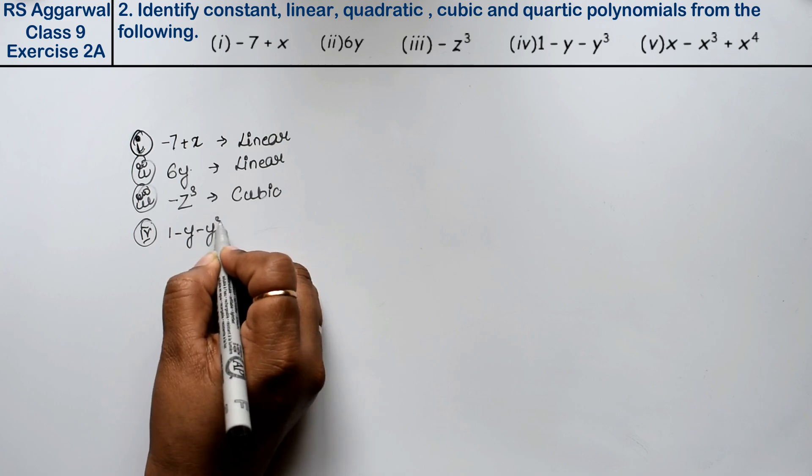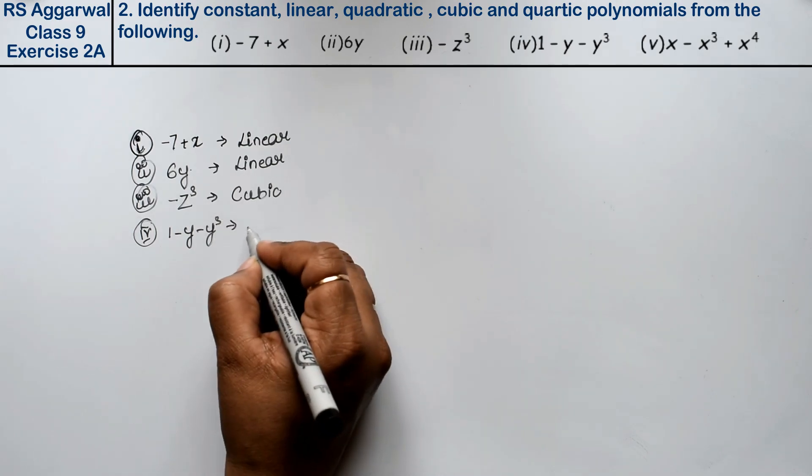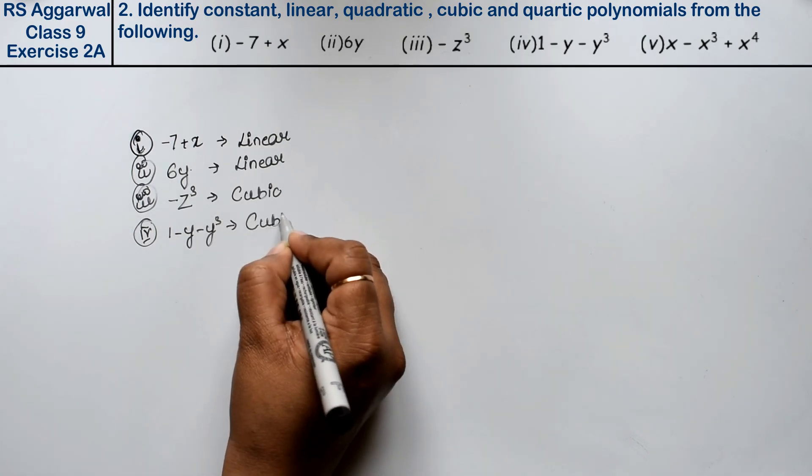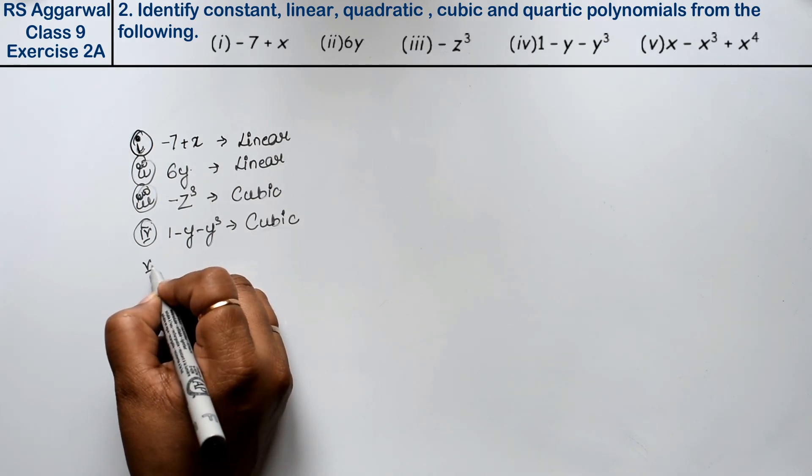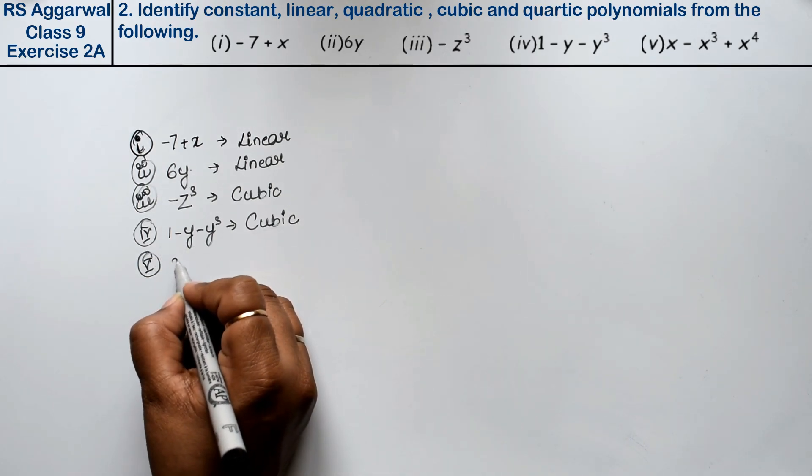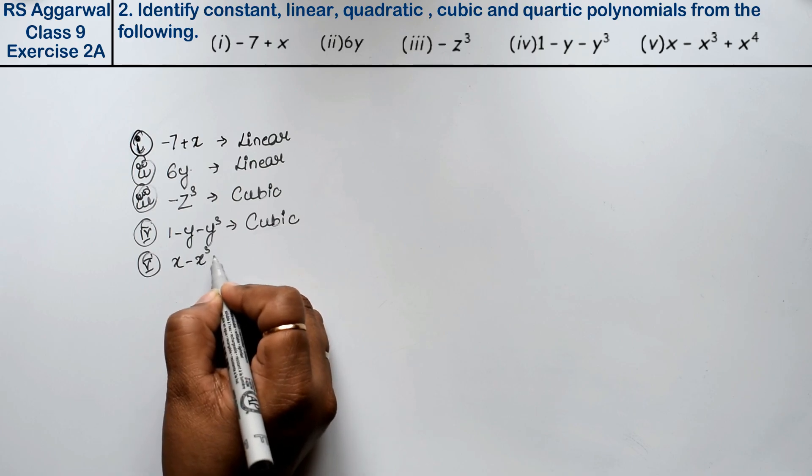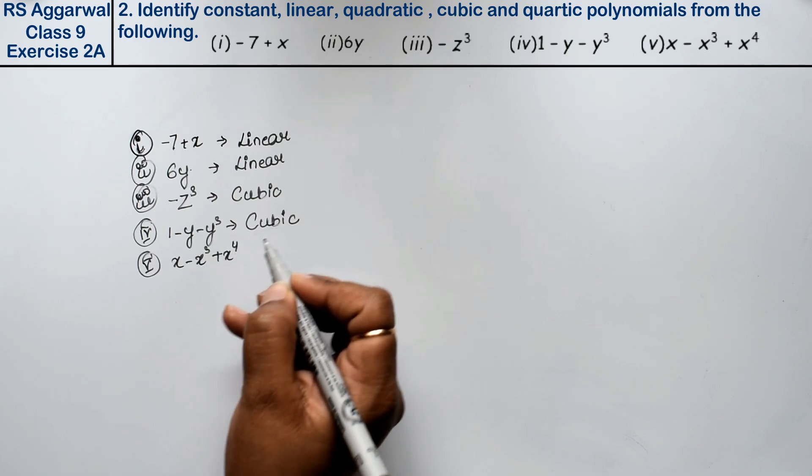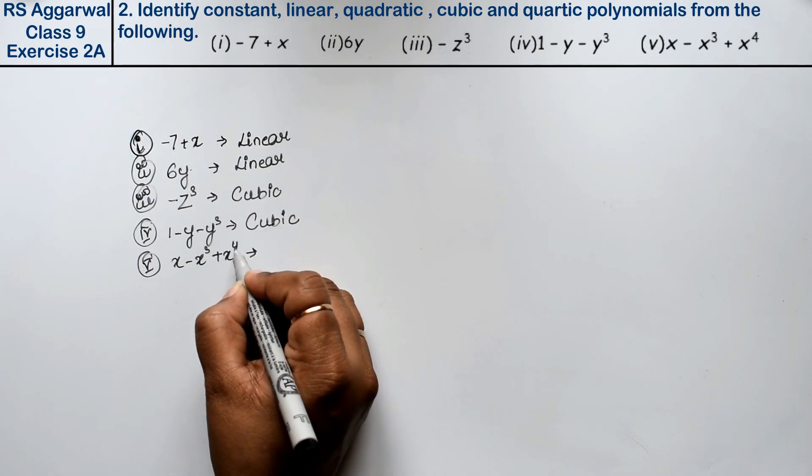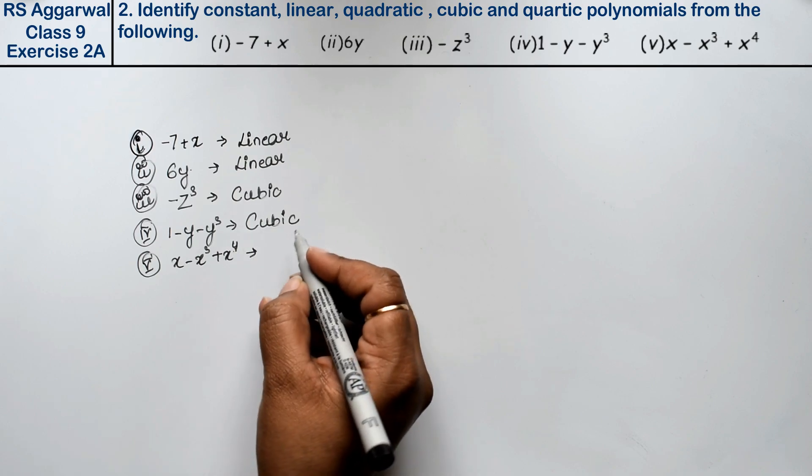Let's do the fifth part. Fifth part is x - x³ + x⁴. Friends, when the maximum power is 4, so what does this become? Quartic polynomial.